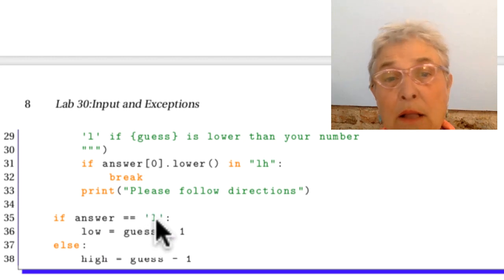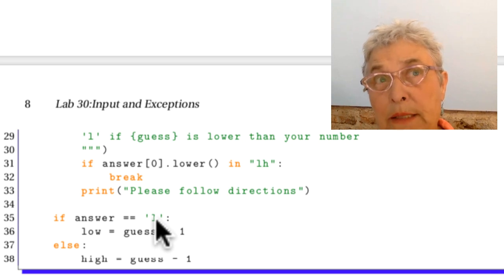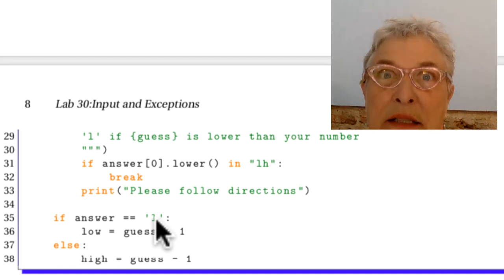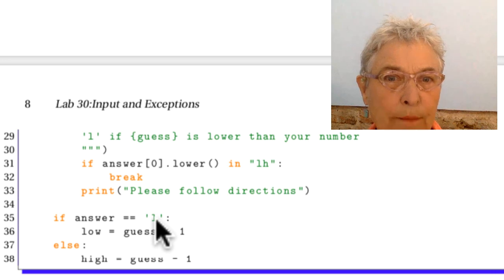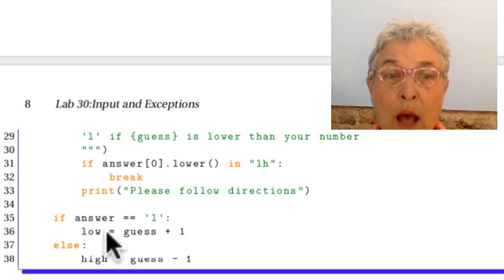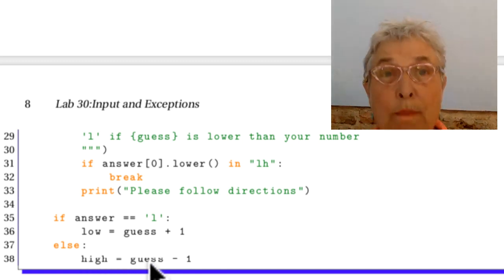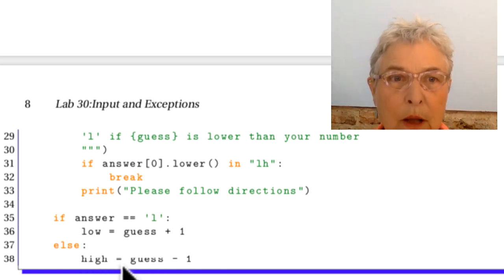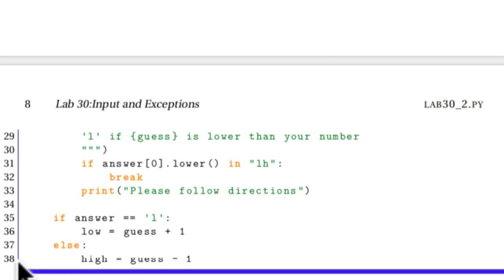If it's L, that means the number I gave was too low. It cannot be that number, so it could be as little as that number plus one. The low is now moved to that number plus one. Otherwise, it was too high, and then the high goes to that number minus one. Okay, that was a good exercise if you did it. I'll see you in the next lab.